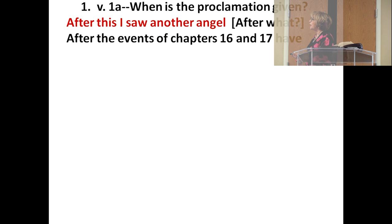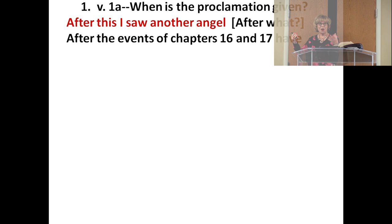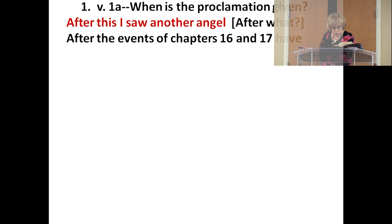When is this proclamation given? John says 'after this' — after the events of chapters 16 and 17. Chapter 16 is the seven bowl judgments; chapter 17 is the judgment and destruction of the false religion of Babylon, destroyed by the kings of the earth who hated it. After all that, another angel's proclamation of judgment. The message is given by a powerful and glorious angel of apparently superior rank to the angels of chapter 14, because it declares he had great authority, and the earth was illuminated by his splendor.